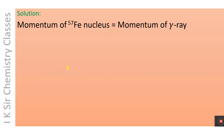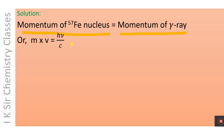Here is the solution. According to the law of conservation of momentum, the momentum of the Fe-57 recoil nucleus will be equal to the momentum of the gamma ray. The momentum of the recoil nucleus is given by m×v, and the momentum of the gamma ray — which is electromagnetic radiation — is given by hν/c.